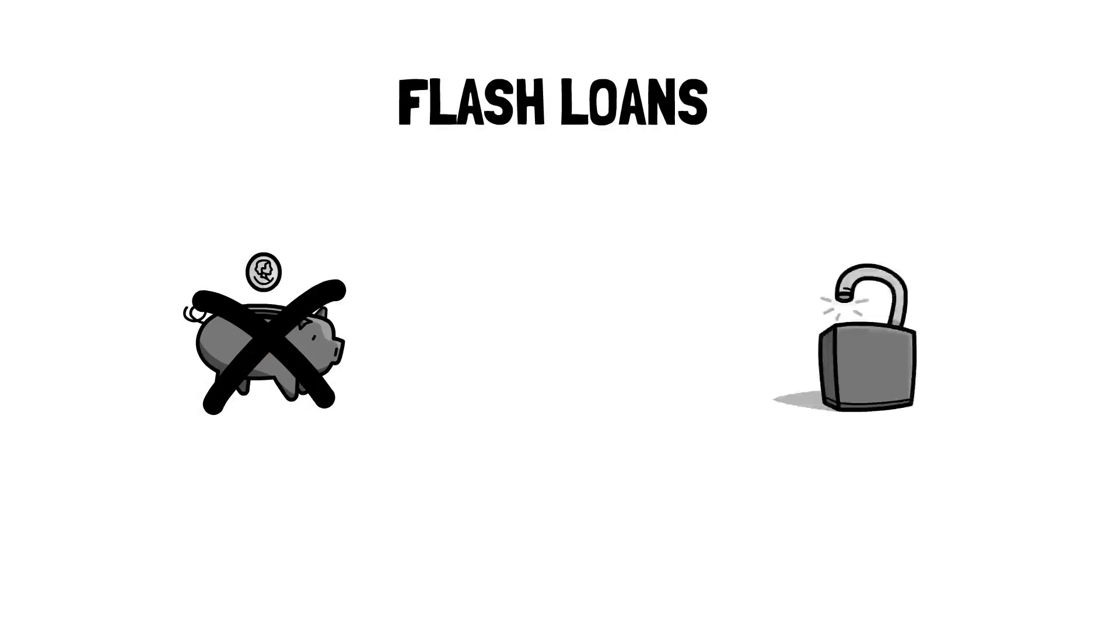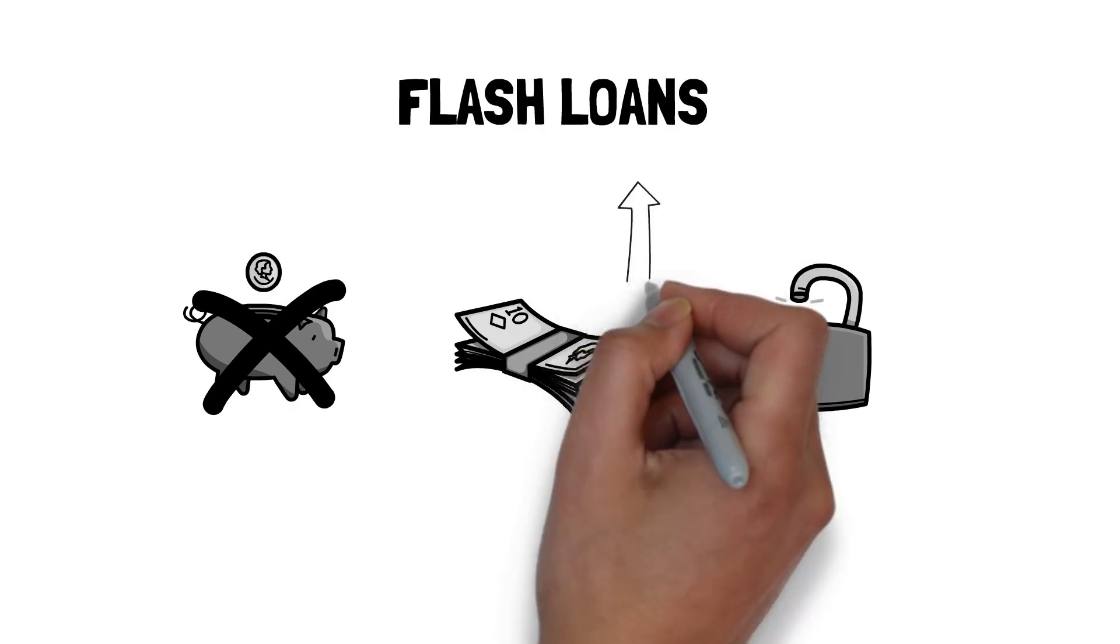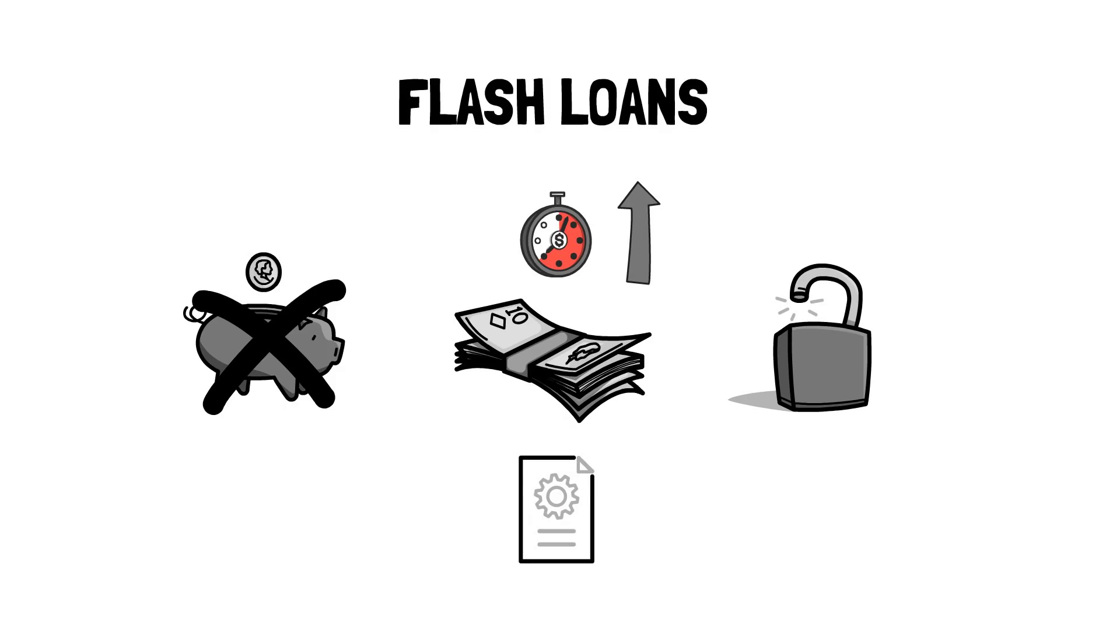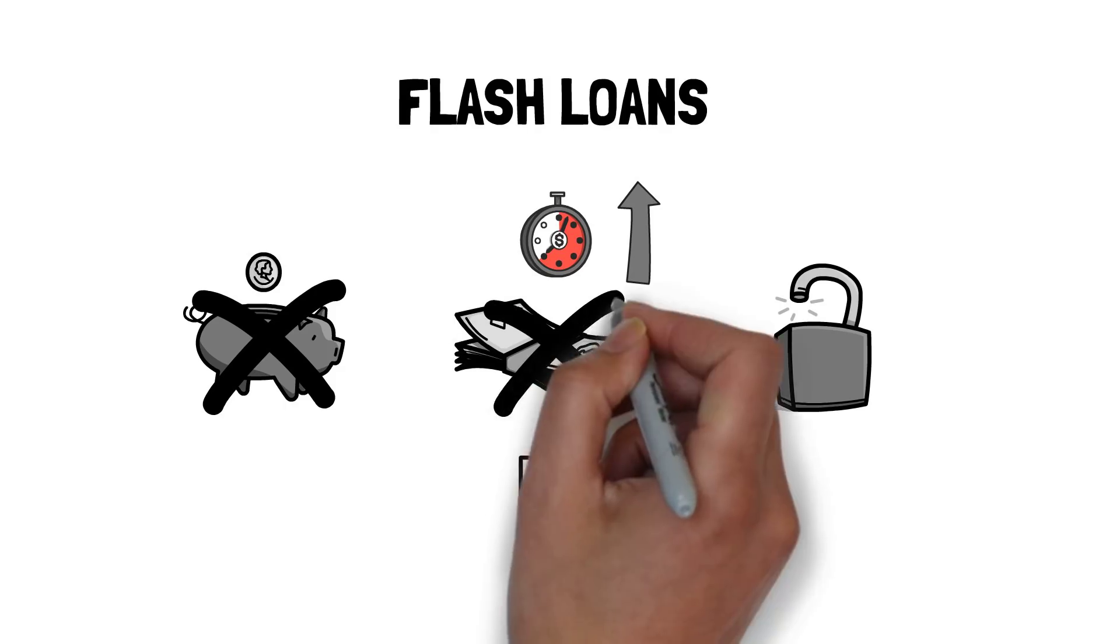Flash loans are uncollateralized, unsecure loans that must be paid back before the blockchain transaction ends. If not repaid, the smart contract reverses the transaction, so that it's like the loan never happened in the first place.